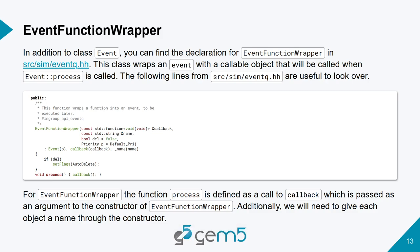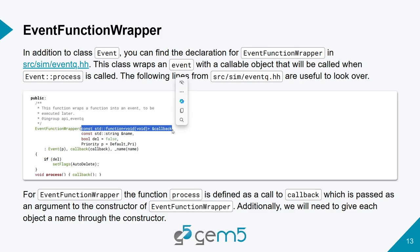In practice, I use events through a class called EventFunctionWrapper. As its name suggests, it wraps an event and a function so you can initialize it with a callable object and set that as the callback function for that event. This way I don't have to inherit from event and write my own class. The prototype for that callable has to be void(void) — it returns void and takes void. An alternative is to extend Event directly to allow arguments.